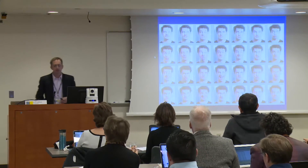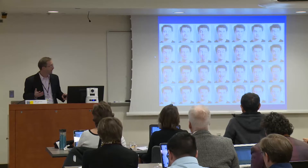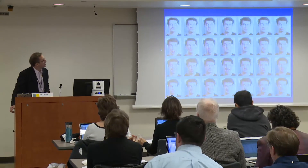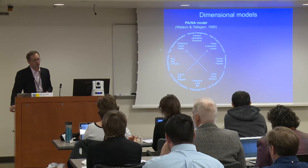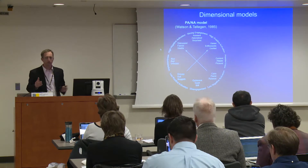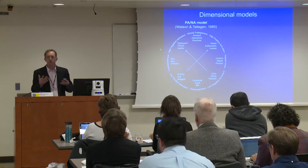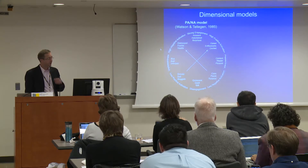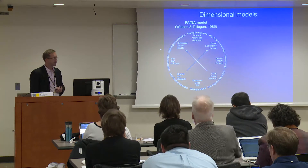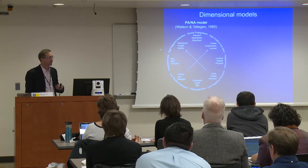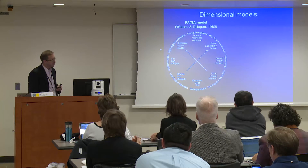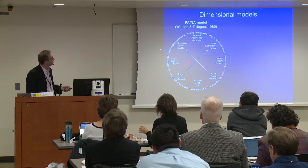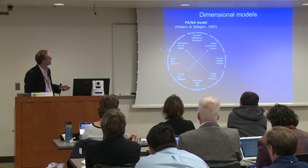As Phoebe talked about, emotions can come in a range of varieties, and we also saw that from Susan. For dimensional models, the goal is to take this bewildering array and reduce it to some number of dimensions. A prominent model, in addition to Russell's model, is Watson and Tellegen's positive and negative affect model. They focus on two dimensions of positive activation and negative activation.